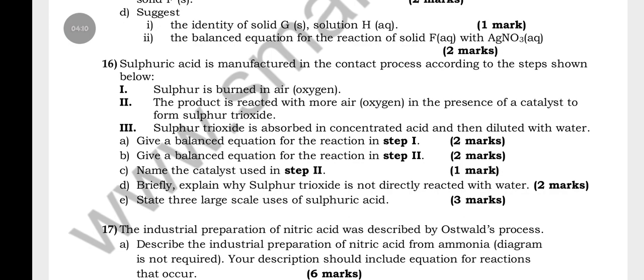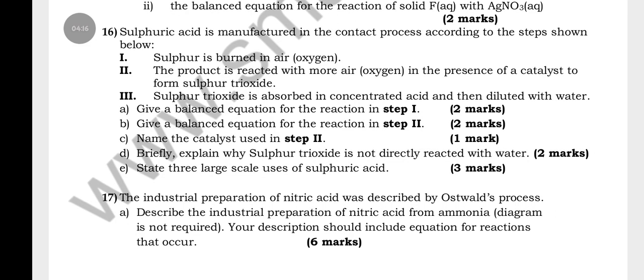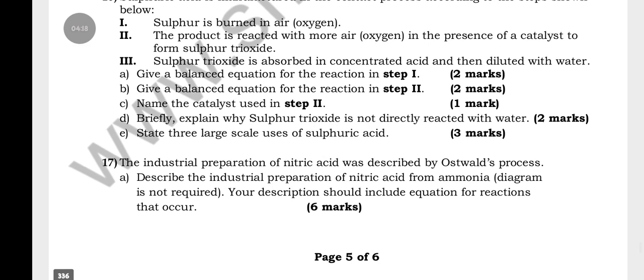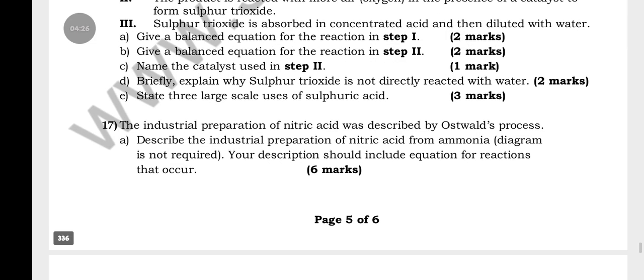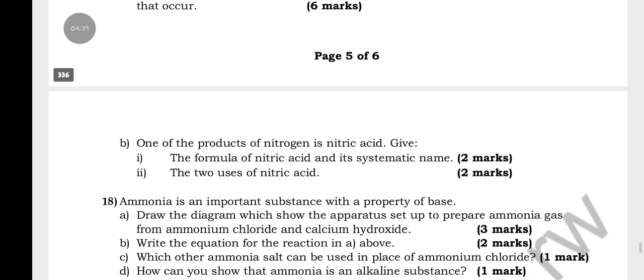Sulfuric acid, H2SO4, is manufactured in the contact process according to the steps shown below. You have the steps from one to three with some questions. You have to give a balanced equation for reaction step one, balanced equation for reaction step two, name the catalyst used in step two, briefly explain why sulfur trioxide is not directly reacted with water, and state three large-scale uses of sulfuric acid.